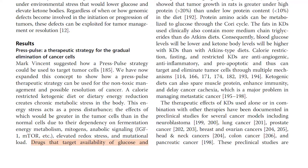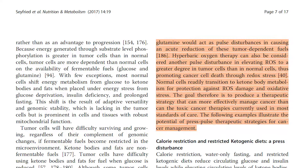Drugs that target availability of glucose and glutamine would act as pulse disturbances in causing an acute reduction of these tumor-dependent fuels. Hyperbaric oxygen therapy can also be considered another pulse disturbance in elevating ROS to a greater degree in tumor cells than in normal cells, thus promoting cancer cell death through redox stress. Normal cells readily transition to ketone body metabolism for protection against ROS damage and oxidative stress. The goal therefore is to produce a therapeutic strategy that can more effectively manage cancer than the toxic cancer therapies currently used in most standards of care.